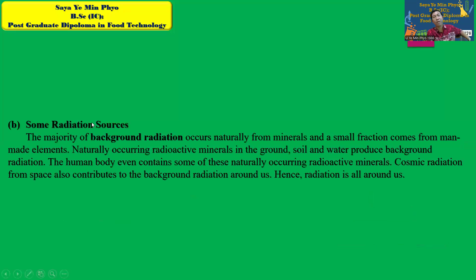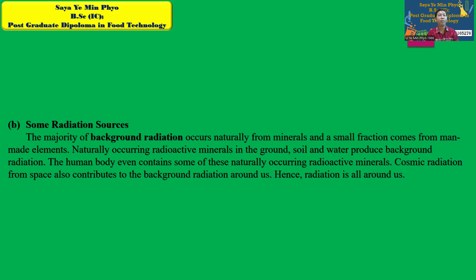The sun is a radiation source. The majority of background radiation comes from natural sources. Naturally occurring radioactive minerals in the ground, soil, and water produce ground radiation. The human body even contains some of these naturally occurring radioactive minerals, which also contribute to background radiation.